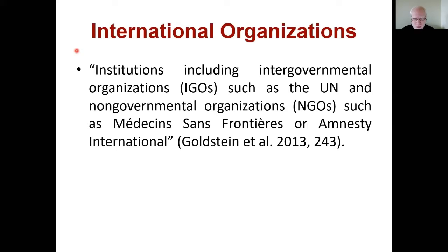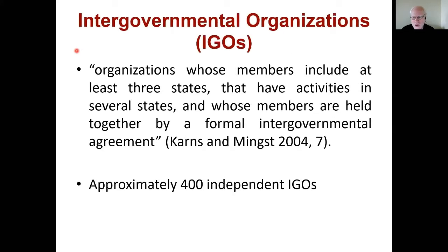What are intergovernmental organizations? Those are organizations whose members include at least three states, that have activities in several states, and whose members are held together by a formal intergovernmental agreement. If just two states make an agreement — say Canada and the US — that may have legal status, but it doesn't qualify as an intergovernmental organization. There also has to be some form of formalization; it can't just be an informal arrangement between three or more states.